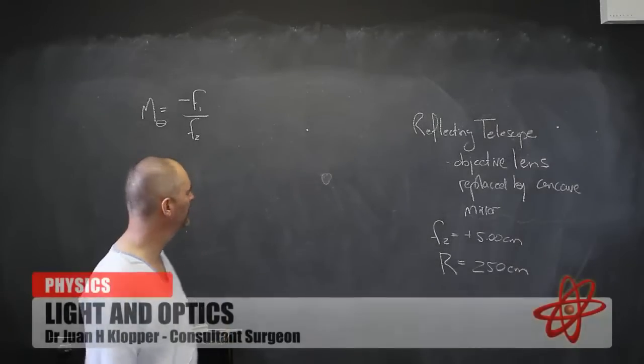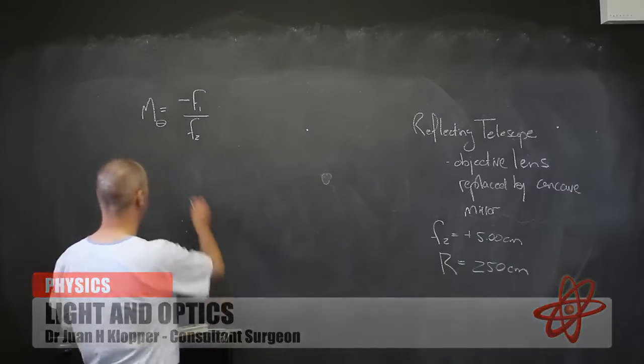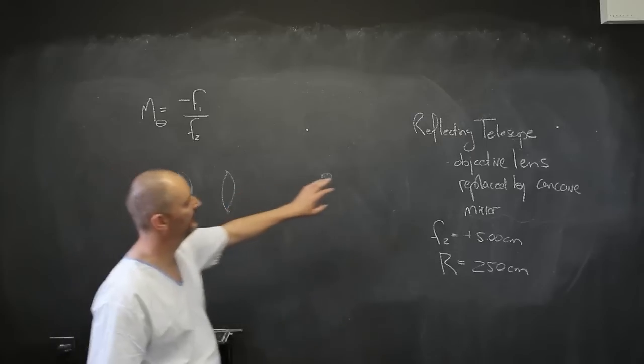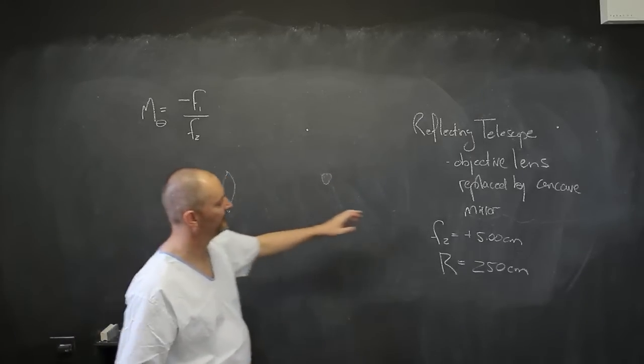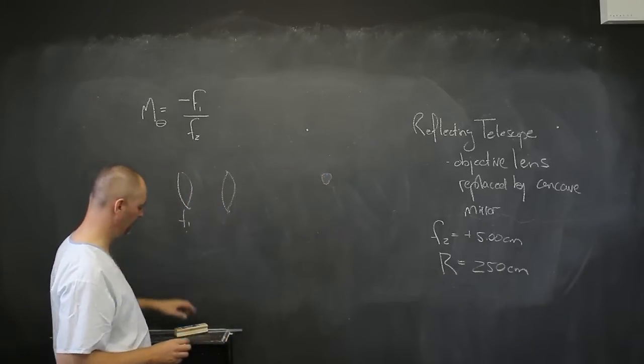Now let's quickly talk about the telescope. You get two types of telescopes: a reflecting telescope and a refracting telescope. Refracting means we are going through two lenses. You get reflecting whereby the objective lens is replaced by a concave mirror, and then the refractive has these two lenses.